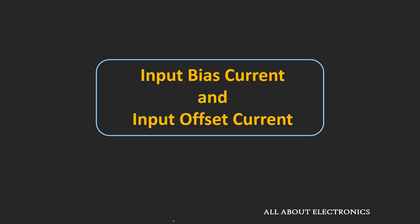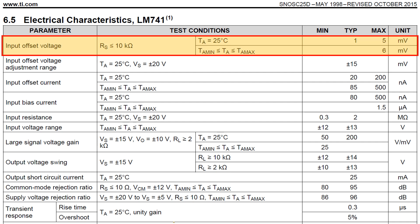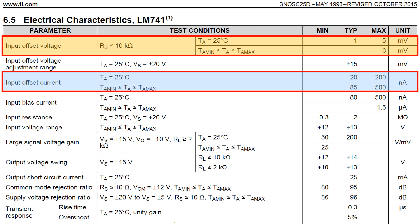Welcome to the YouTube channel All About Electronics. In the last video, we discussed about the DC offset errors in the op-amp and we saw that op-amp manufacturers provide three parameters related to DC offset errors. We have already discussed about the input offset voltage. So now in this video, let us understand about the input offset current and the input bias current, and let us see how these currents can affect the output of the op-amp and how we can reduce the effect of these bias currents.